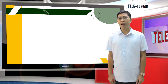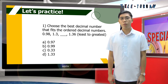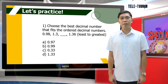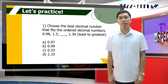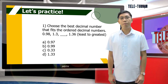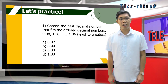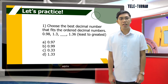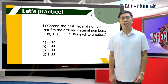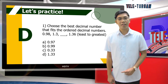To check your understanding about this session, let's do a short activity. Read each question carefully and choose the letter of the correct answer. Number 1: choose the best decimal number that fits the ordered decimal numbers — 98 hundredths, 1 and 3 tenths, blank, 1 and 36 hundredths, from least to greatest. A: 97 hundredths. B: 99 hundredths. C: 33 hundredths. Or D: 1 and 33 hundredths. If you think your answer is D, great! That's the correct answer.